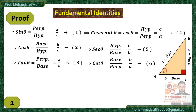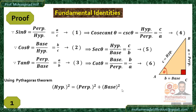I will use these equations to prove the fundamental identities, but I start with the Pythagorean theorem. You know that hypotenuse squared equals perpendicular squared plus base squared. Since hypotenuse is C, perpendicular is A, and base is B, we can write: C² = A² + B². This is equation number 7, which I will use along with the diagram to prove the fundamental identities.